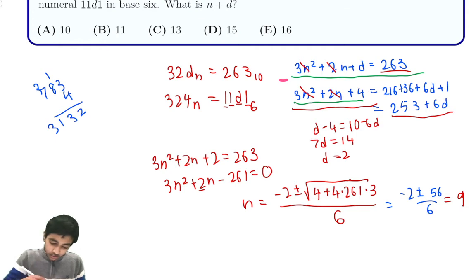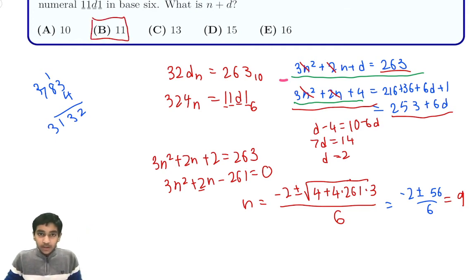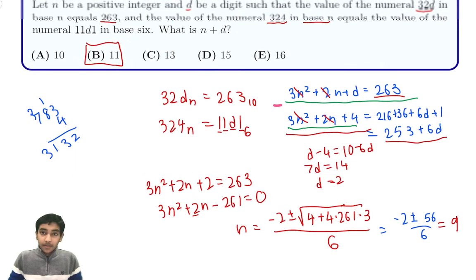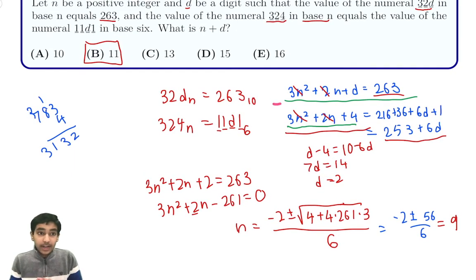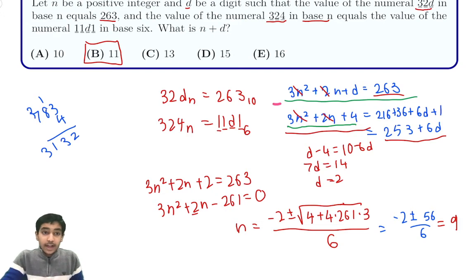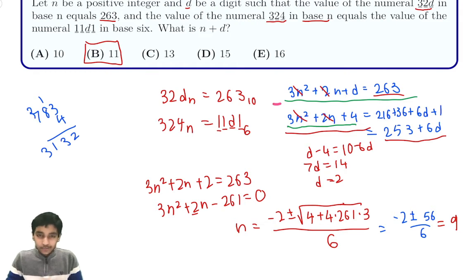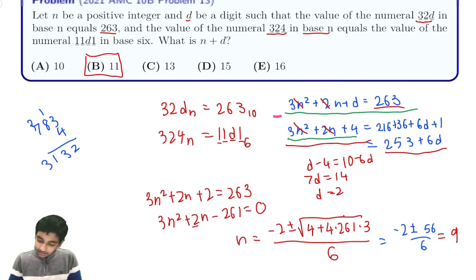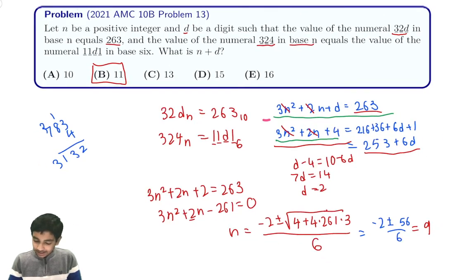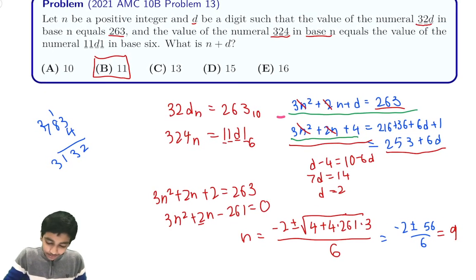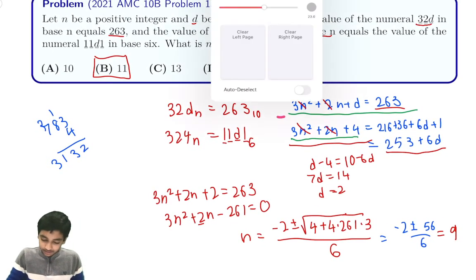Since the base cannot be negative, we take the positive root, giving negative 2 plus 56 over 6, which is 54 over 6, or 9. So n is 9, d is 2, and the answer is 9 plus 2 equals 11. Let's substitute back in to make sure our answer is correct — a great way to avoid mistakes in systems of equations problems.